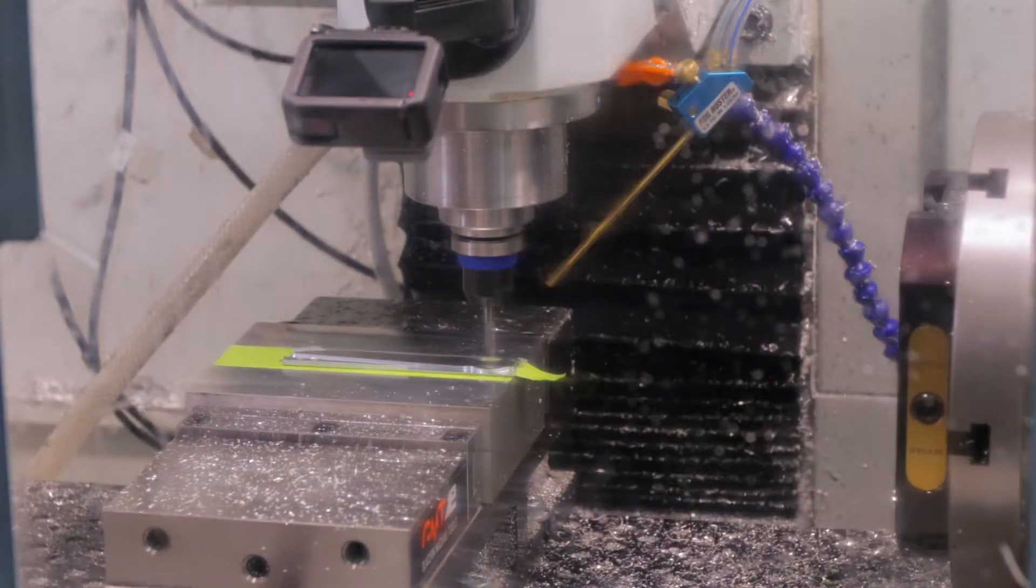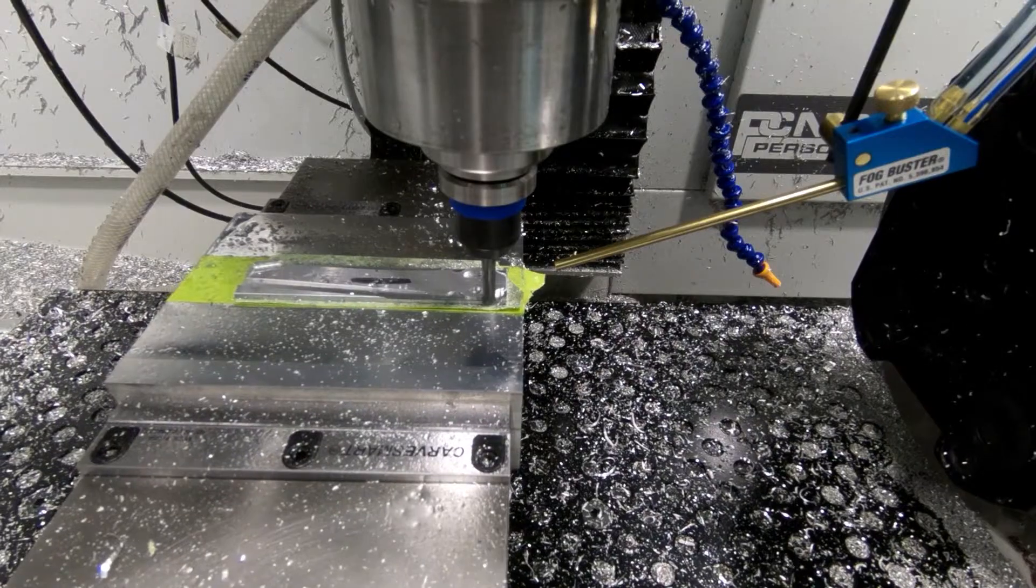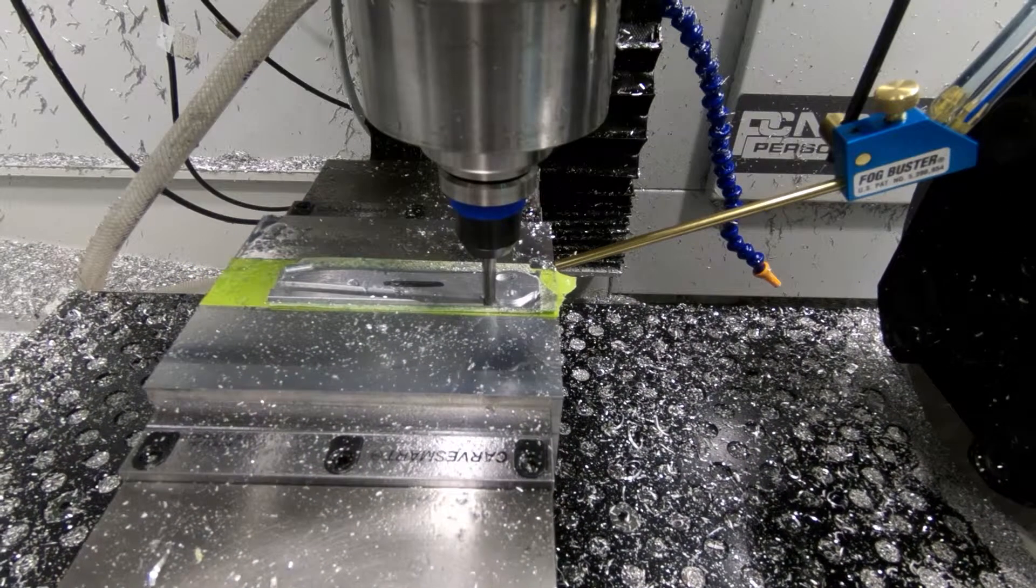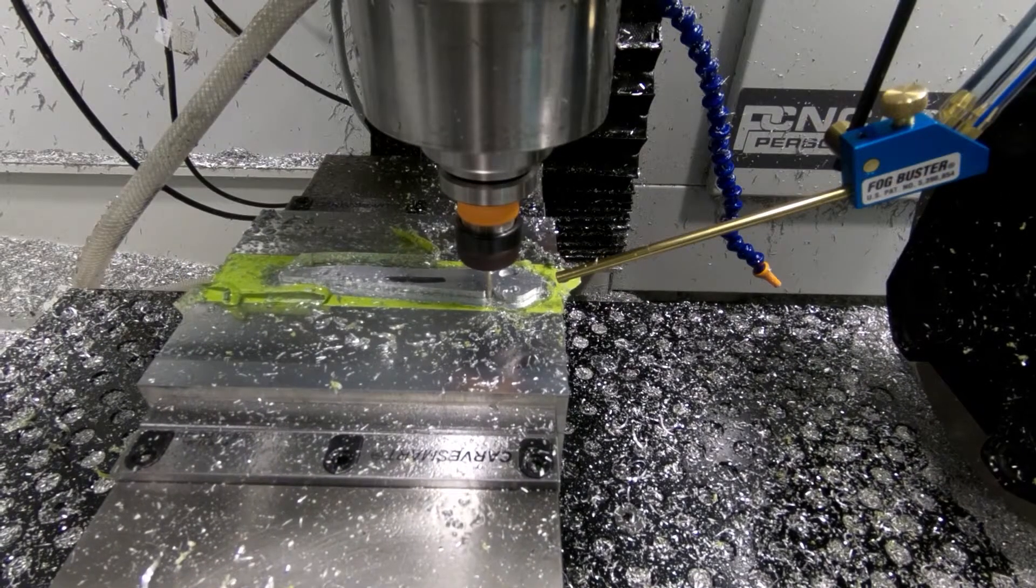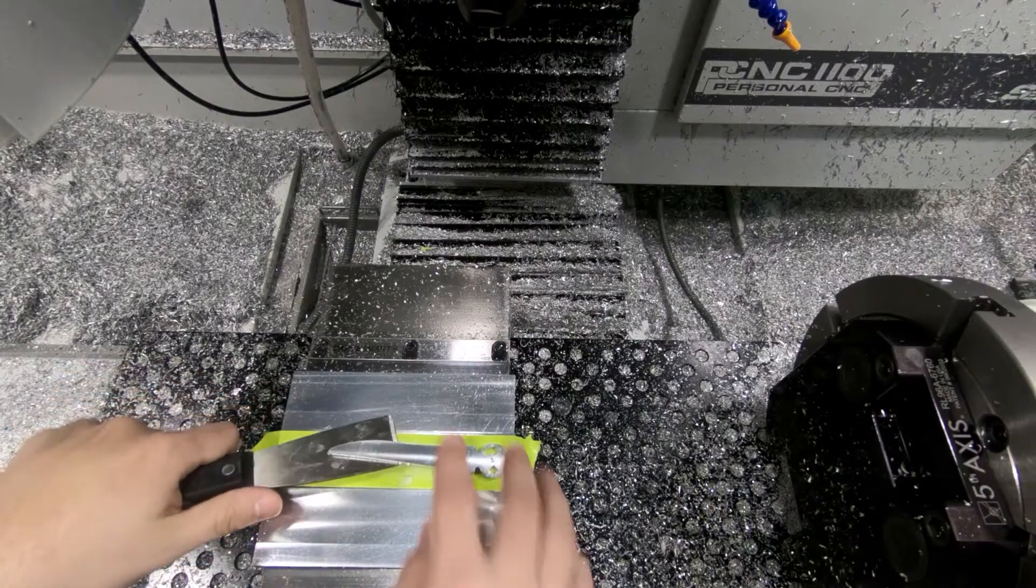I'm taking light cuts so that I don't risk pulling the part up with the flutes of the end mill, but if you take too light of cut, potentially you might heat up the part, which can also cause the glue to fail. I do a couple of light finishing passes with a 3/32nds end mill, but then the part can be peeled off.